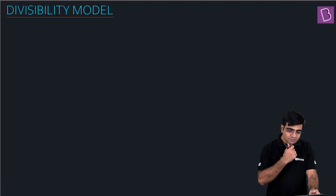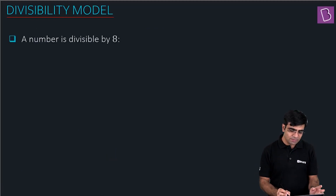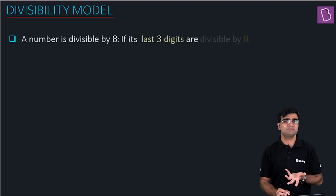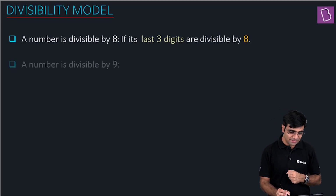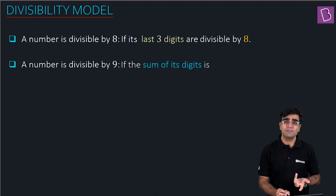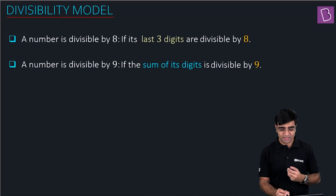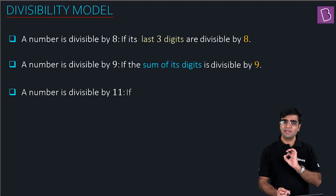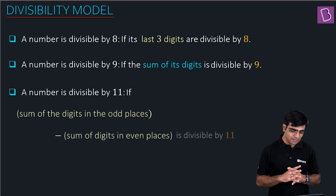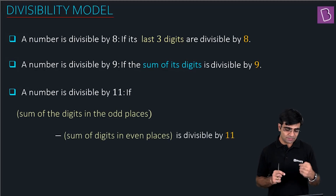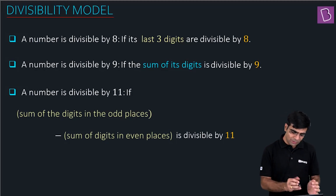For divisibility by 8, the last three digits have to be divisible by 8. For divisibility by 9, the sum of the digits has to be divisible by 9. For divisibility by 11: the sum of the digits in odd places minus the sum of the digits in even places must be divisible by 11.